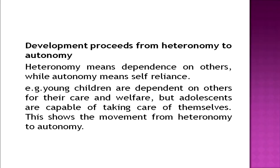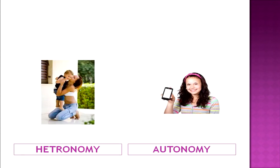A ten-year-old with the same desire will not make this impossible demand, since he or she will not want to trouble the parents, having acquired the understanding that it is not possible to get chocolate at midnight. Another principle is that development proceeds from heteronomy to autonomy. Heteronomy means dependence on others, while autonomy means being self-reliant. Children are dependent on others for their care and welfare, but adolescents are capable of taking care of themselves, as shown in this picture.